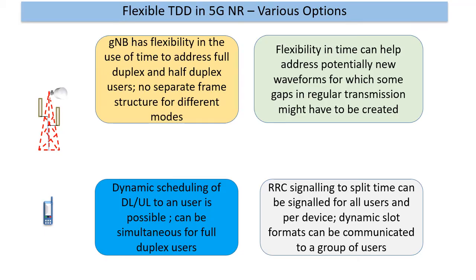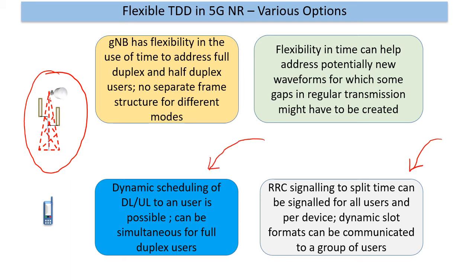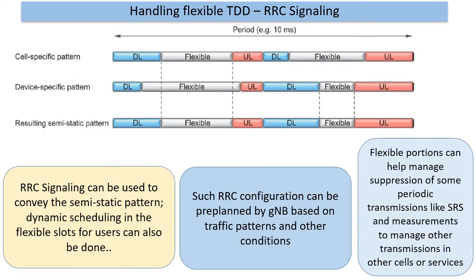If we look at how flexible TDD is actualized in 5G NR, the gNodeB is the master of all radio resource management. It has an option to do signaling at the RRC level as well as at the PDCCH level to control the flexibility in TDD. Specifically, compared to LTE, unlike just having downlink and uplink pieces, we now have explicit flexible time periods configurable both at the cell level and device level, resulting in a net pattern where we could have flexibility in these time zones.